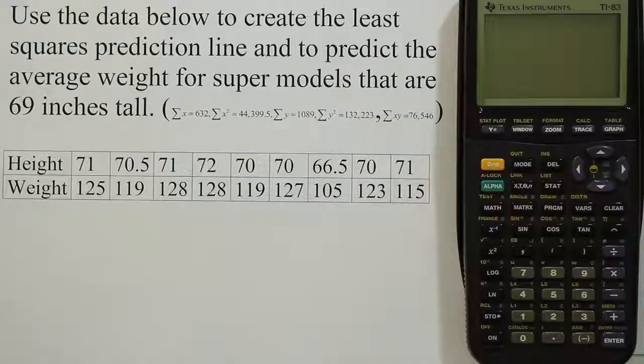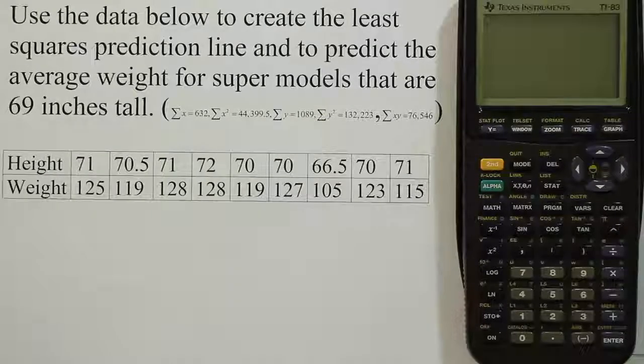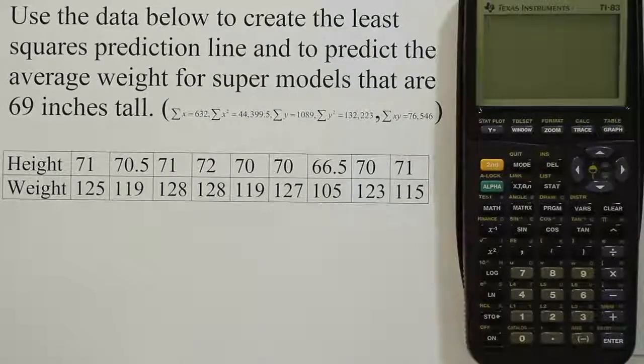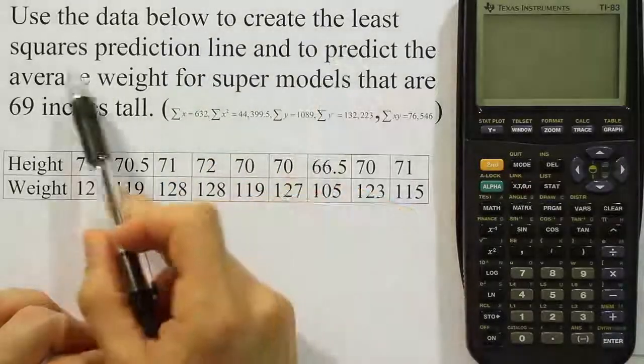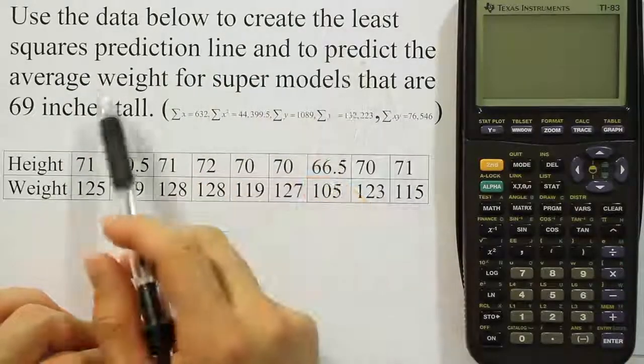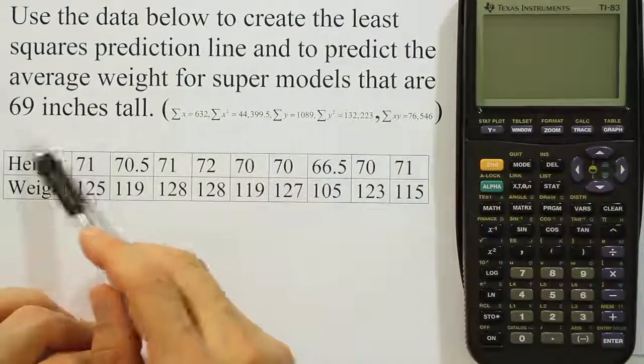In this video we're looking at the procedure to calculate the regression model using the graphing calculator. So it says use the data below to create the least squares prediction line and to predict the average weight for supermodels that are 69 inches tall.